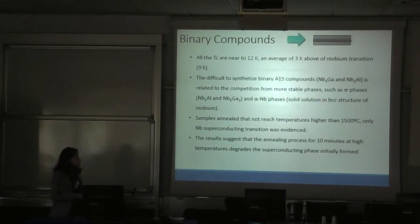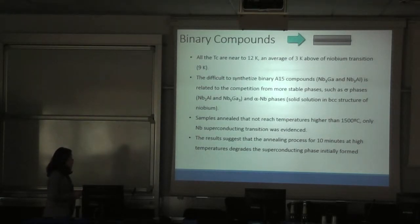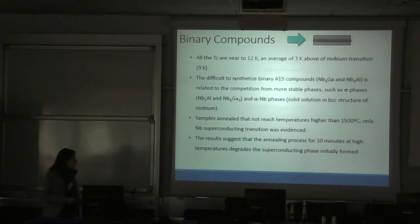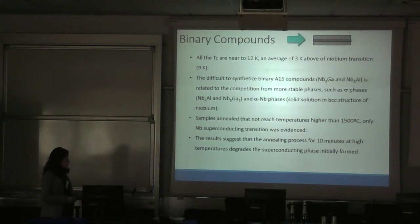Samples annealing that not reach temperatures higher than 1,500 Celsius, we only find niobium superconductor transition. The results suggest that the annealing process for a long period, around 10 minutes, at high temperatures, degrades the superconducting phase initially forming. I say that because we see that the superconducting transition is present, but the critical temperature is lower than is reported in literature.